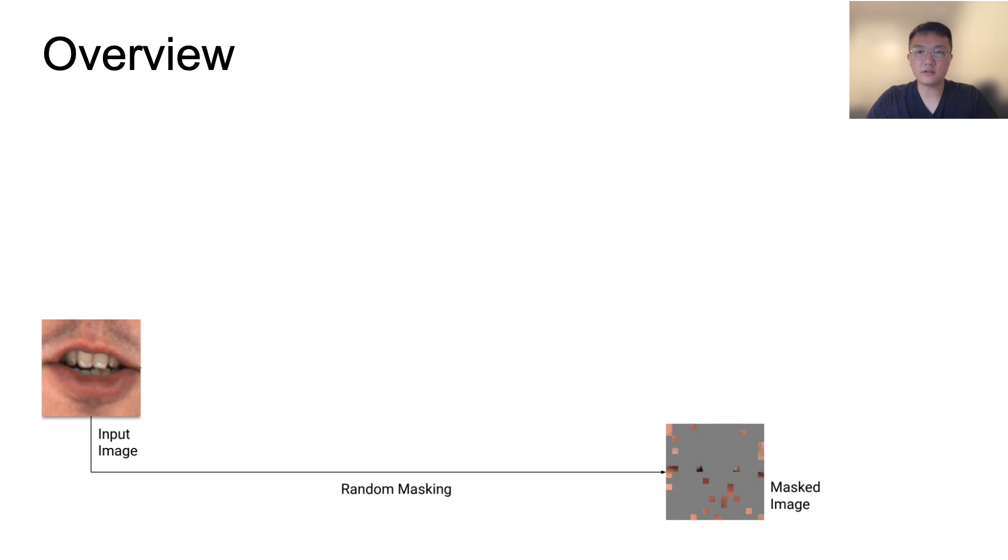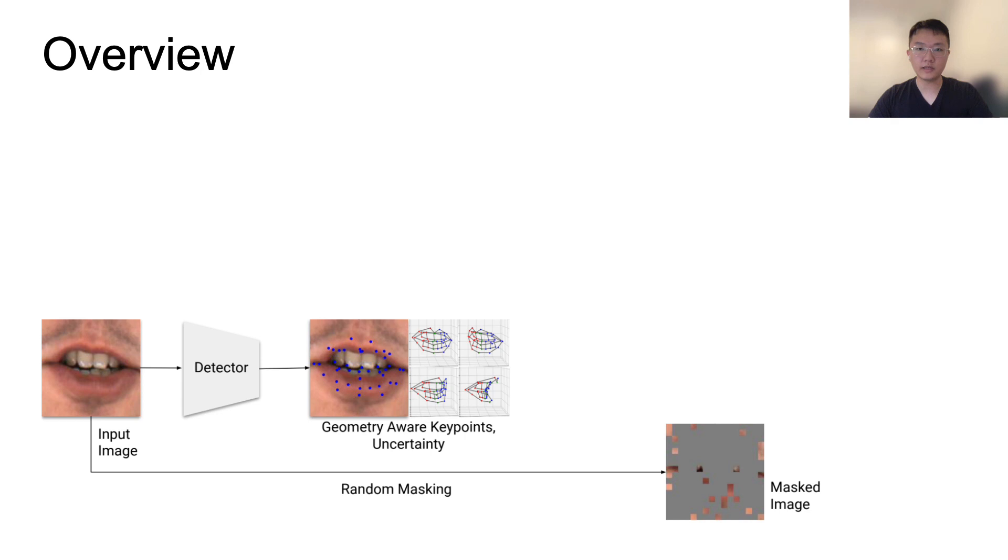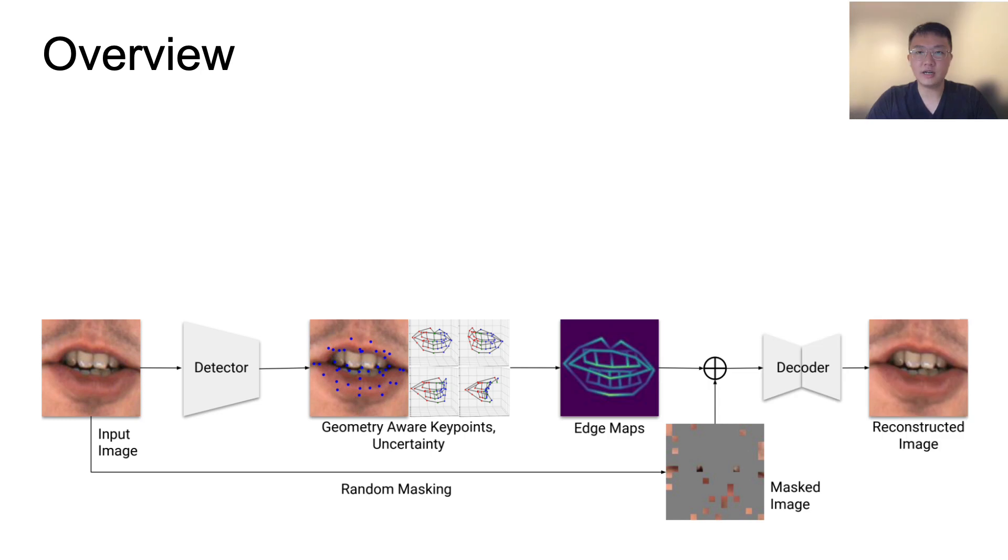Now let's go over the whole pipeline. Given an input image, we randomly mask the majority of it so we can hardly tell the shape. Then we detect the 3D keypoints and their uncertainty. Note that the detector is learned from scratch using the losses. We draw edges between keypoints based on position and certainty, concatenate it with the masked image, and reconstruct the original image.